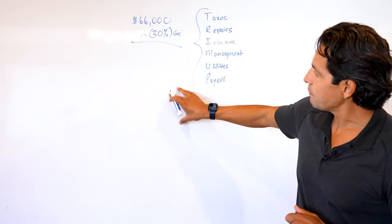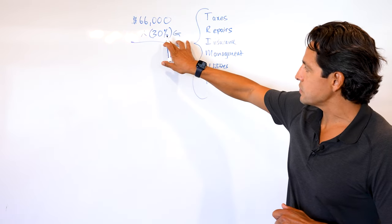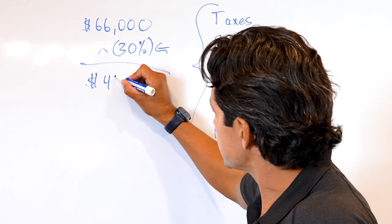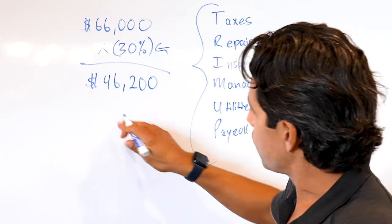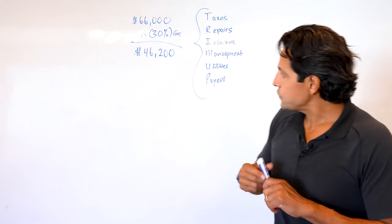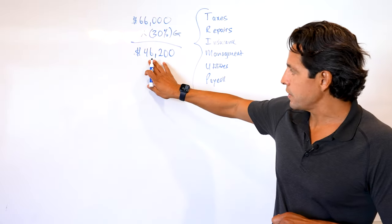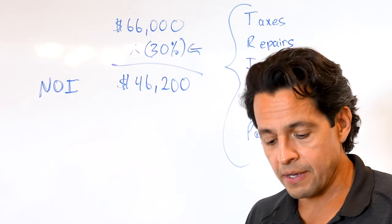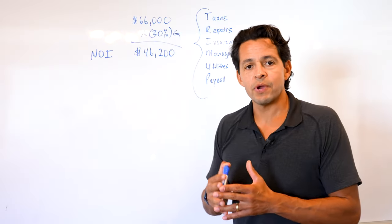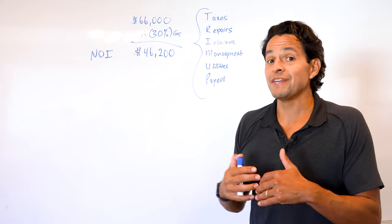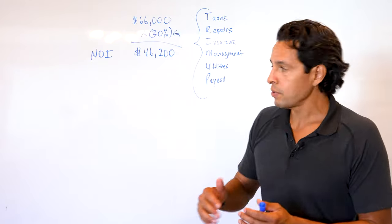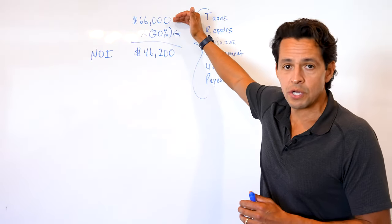Now that we've figured that out, we're going to subtract the 30%, which is the operational expense from the gross revenue. We're going to subtract our expenses and we end up with $46,200. This is a very important number because this is what we know as the net operating income. In order to calculate cap rate, we always need to find out the net operating income. So when we think of cap rate, it's very important that we're not working off of the gross number.